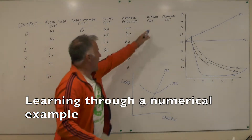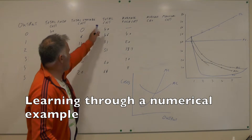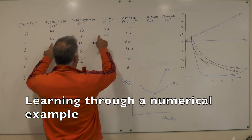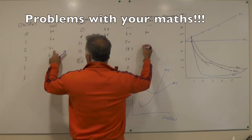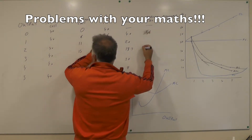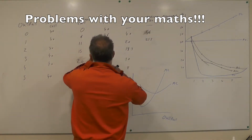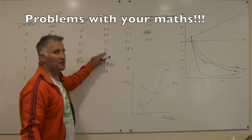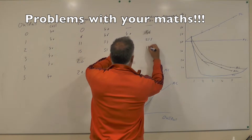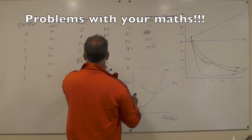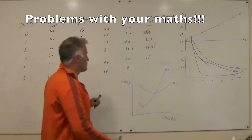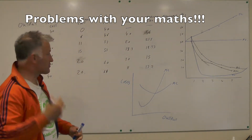Now I've got the average fixed cost. Then we do the average cost, which is the total cost divided by the output — not the average variable cost, the average cost. So at output 0 we leave it. 46 divided by 1 is 46; 51 divided by 2 is 25.5; 55 divided by 3 is 18.33; 60 divided by 4 is 15; and 66 divided by 5 is 13.2. You're seeing a teacher under a bit of pressure here as I'm trying to work out all the numbers in my head.